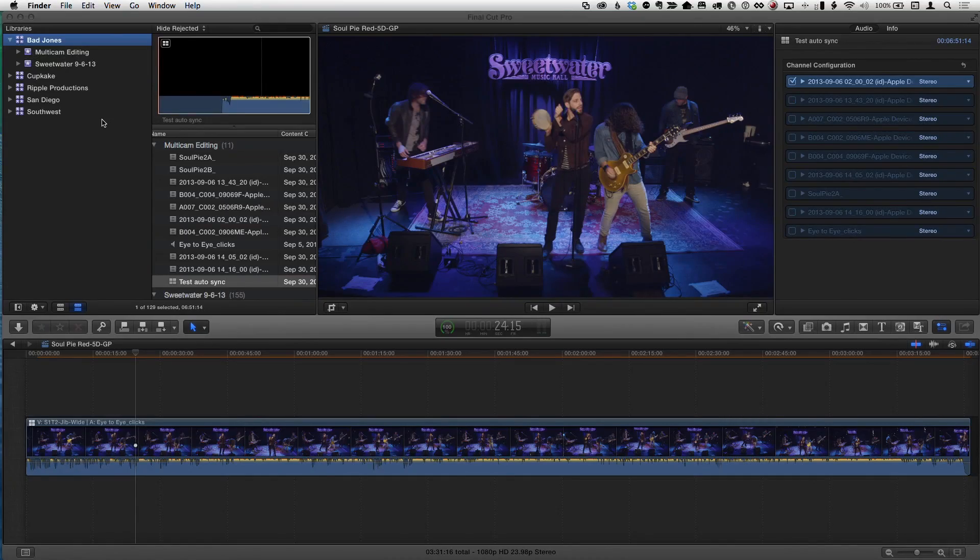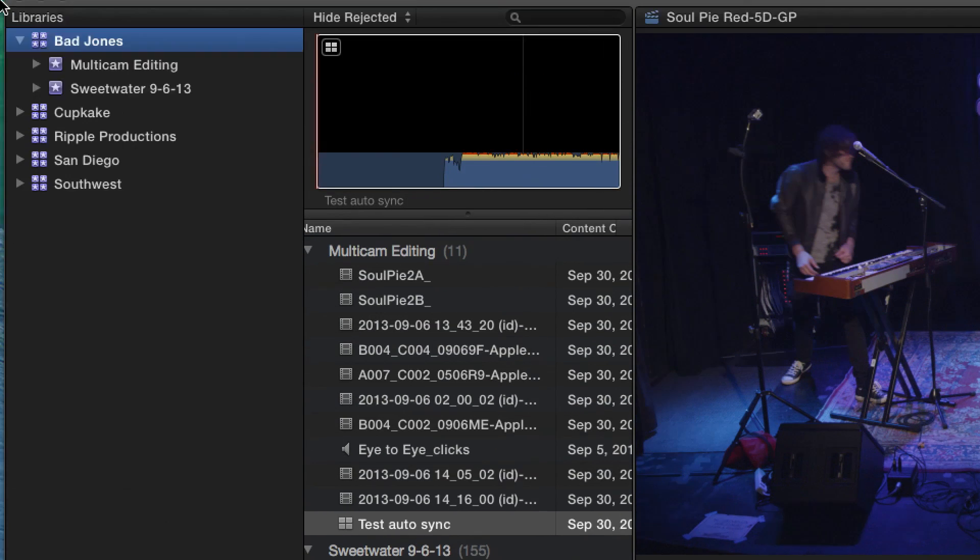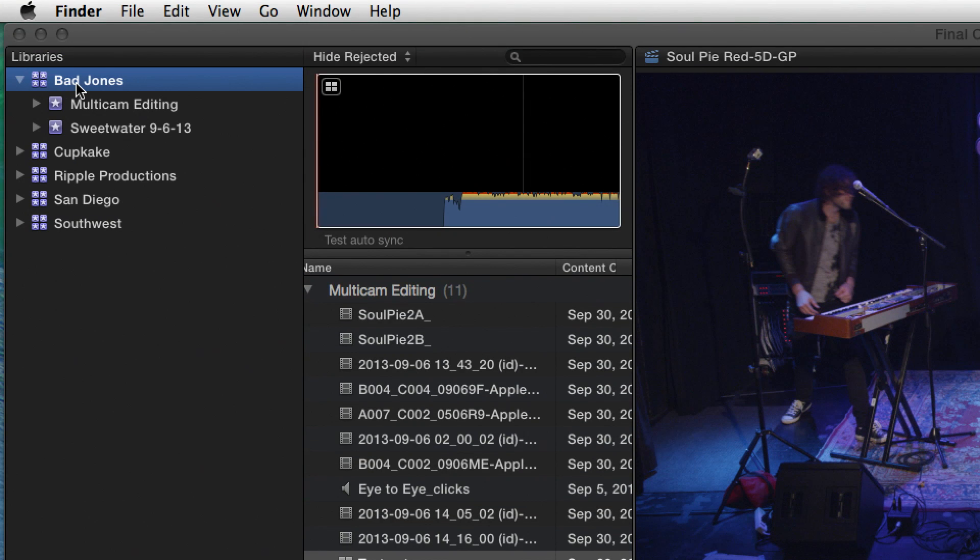We're talking Final Cut Pro and archiving, in particular, an entire library. Here I am in Final Cut Pro 10 and I have these series of libraries. I have this library which is a production of this band called Bad Jones, and there's multiple events in it.